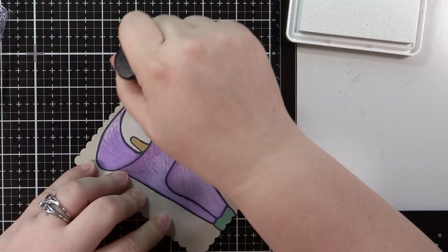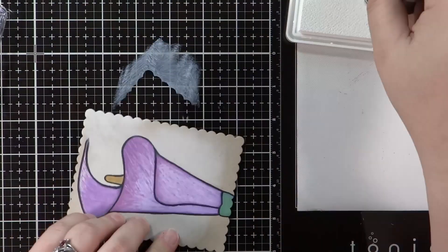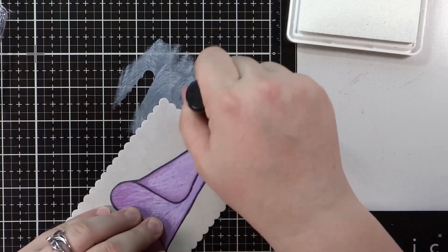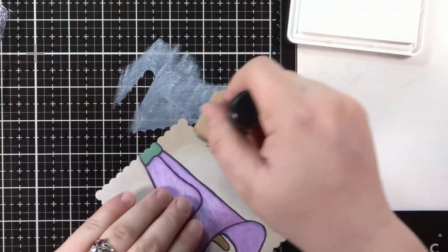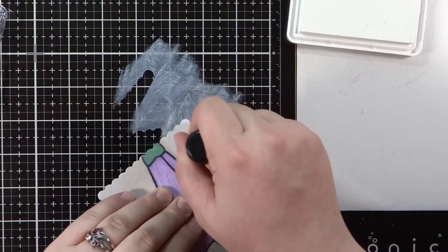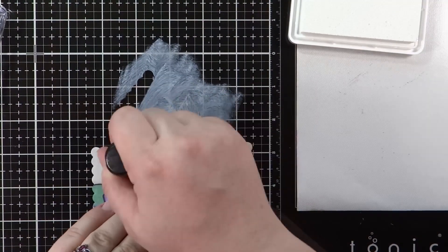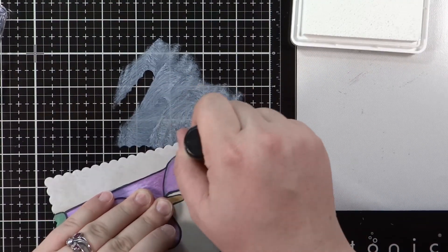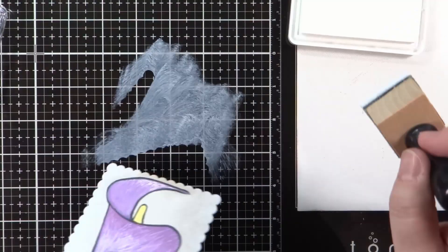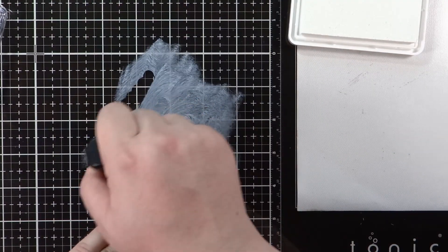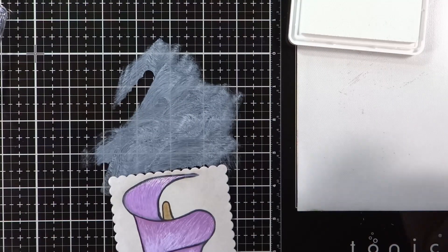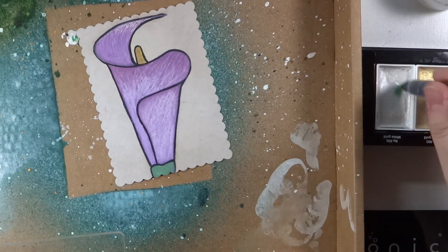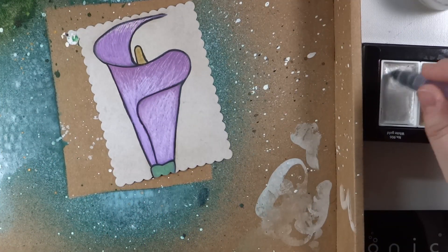I really like the way the Hero Arts unicorn pigment ink looked on that craft cardstock blend out like that. So I'm taking that again and I'm just going to blend the entire piece around the lily. And I cut that out with a Lawn Fawn scalloped rectangle die. And now I'm going to add some splatter with the white gold watercolor that comes in the Starry Night watercolor set.